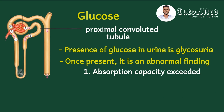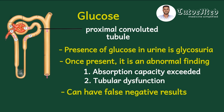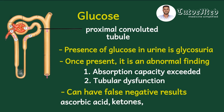The second cause of glycosuria is tubular dysfunction — where the absorption capacity is not exceeded, but the tubules themselves are dysfunctional. False negative results can also occur, where glucose is present in the urine but the dipstick reports negative. Causes of false negatives include ingestion of vitamin C (ascorbic acid), ketones, and drugs like aspirin and levodopa.